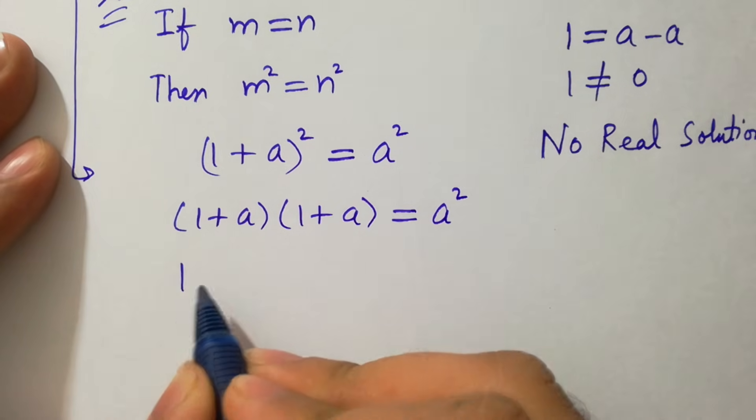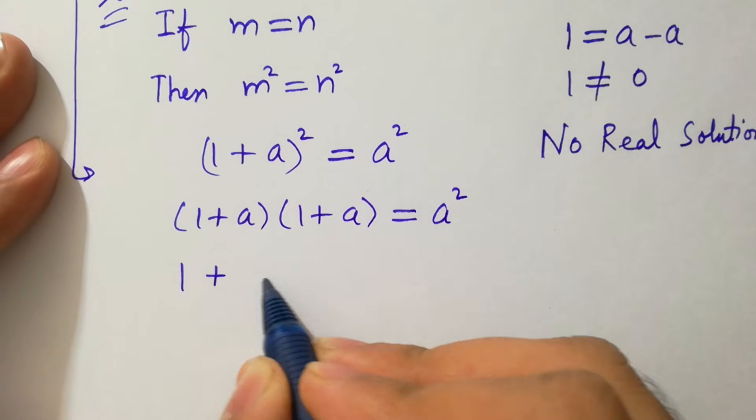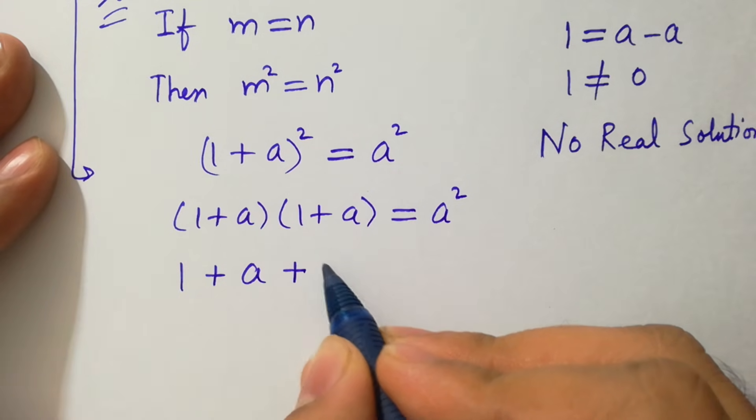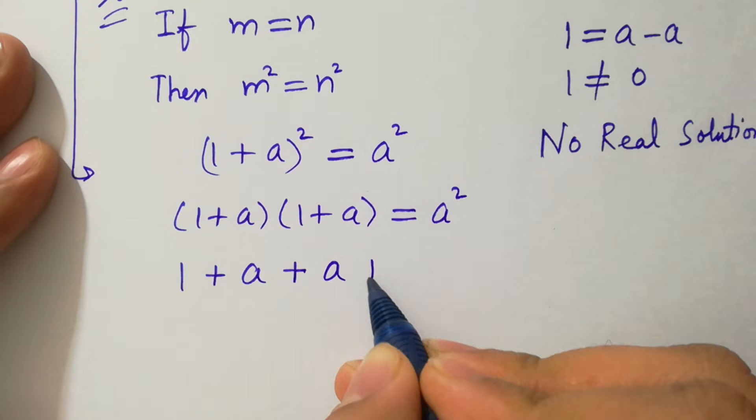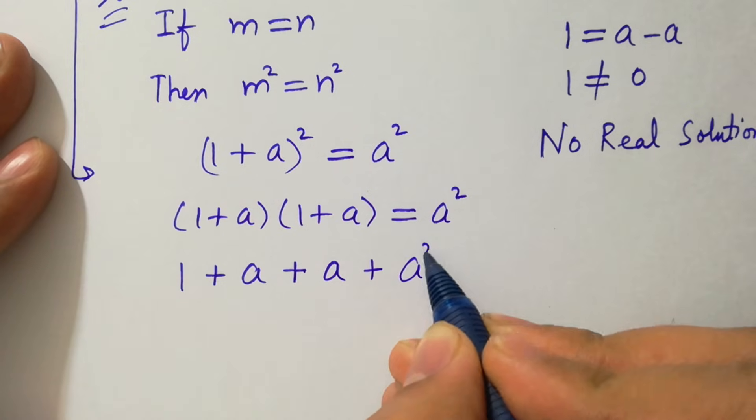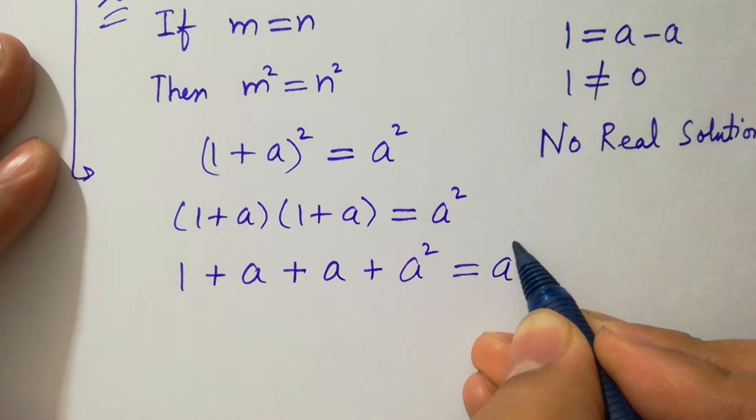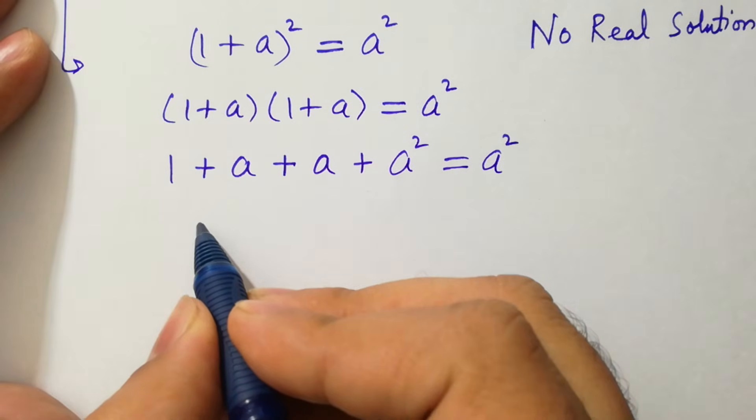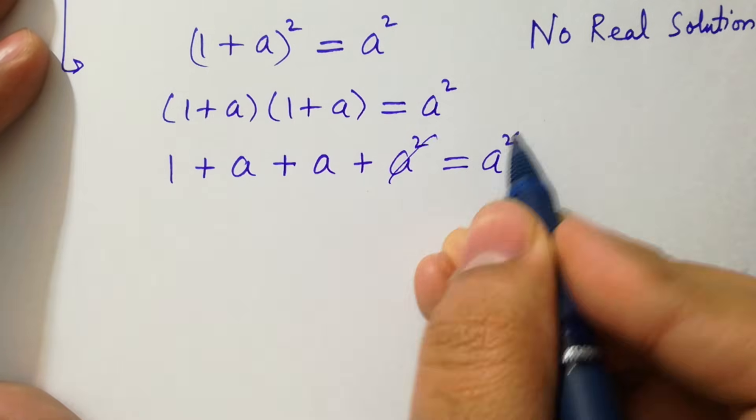1 times 1 is 1, plus 1 times a is a, plus a times a is a², where we have a² and a² cancels.